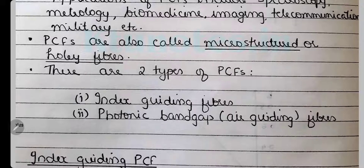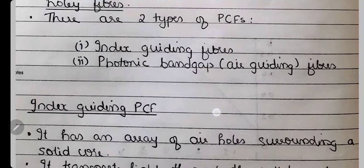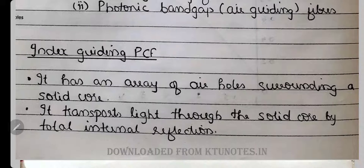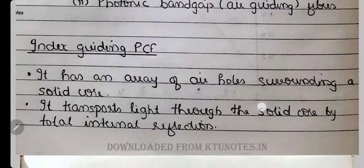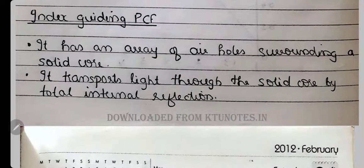In PCF, there are two types: index guiding PCF and photonic bandgap (air guiding) PCF. Index guiding PCF has an array of air holes surrounding a solid core. The solid core is surrounded by an array of air holes with cladding formed by periodic microstructured air holes. It transports light through the solid core by total internal reflection.